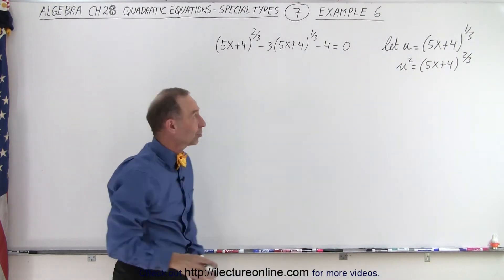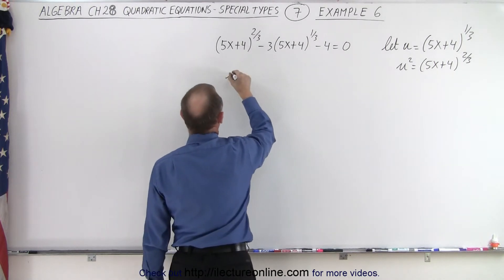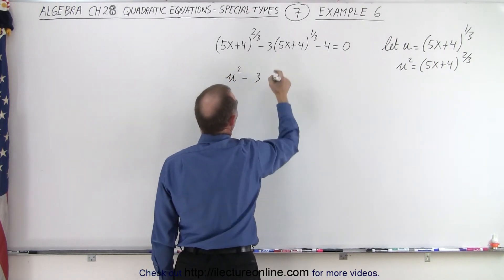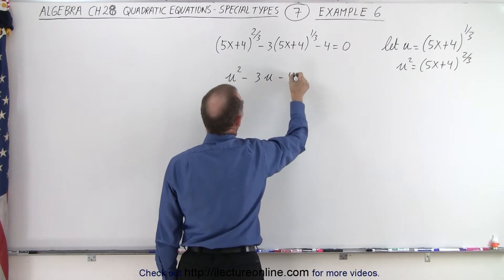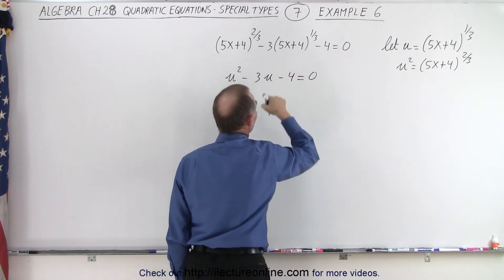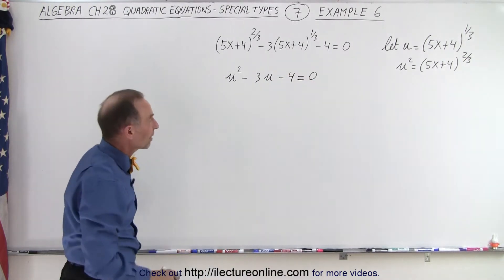And now we can make the substitution. Instead of this, we write u squared minus 3 times. Instead of this, we write u minus 4 is equal to 0. And now we solve this simple quadratic equation.